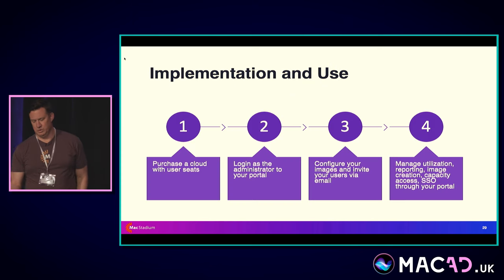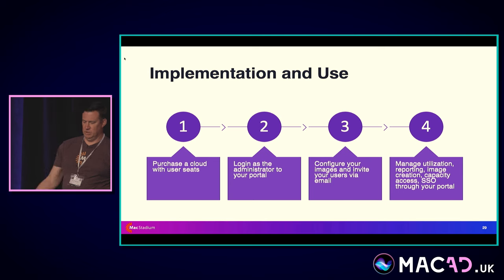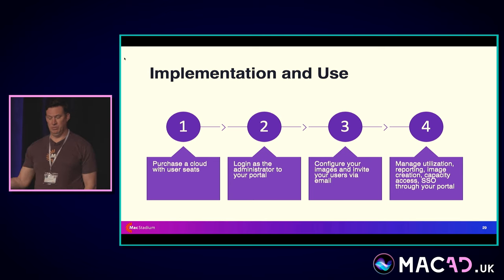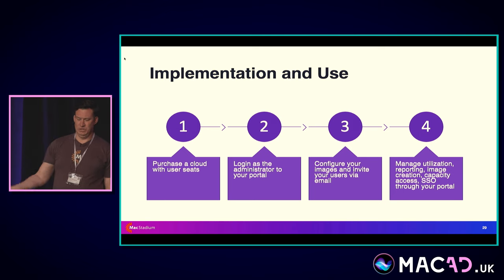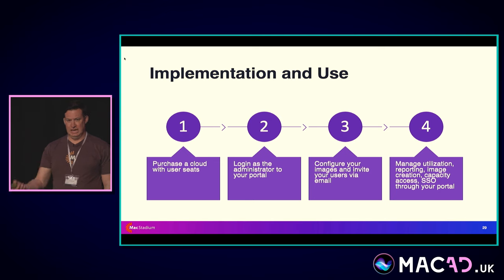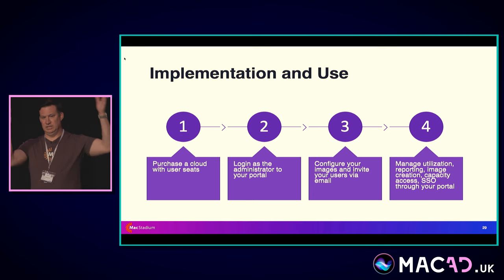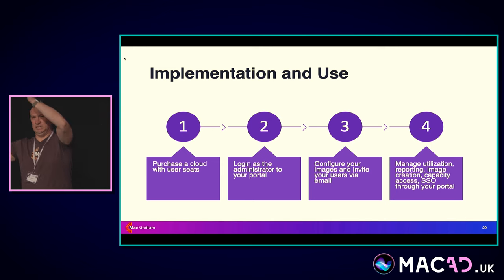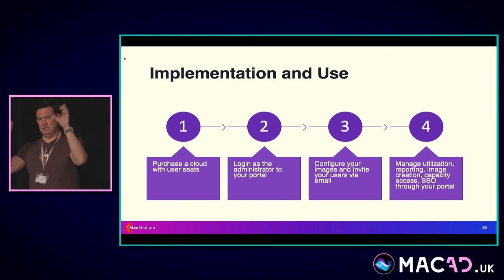On the Virtual Command side, it's a similar simple process: you purchase a cloud with user seats, log into the portal, start setting up your users, get your images going with the tools you care about, and associate those images to users by tags. If you have a group of devs, you call it dev. If you have test, you have a test group — you may have three or four images per group. When the user logs in, they get to see the desktops available, they pick one, they get it, and they go.